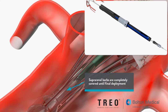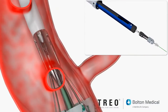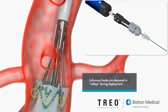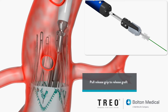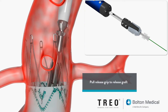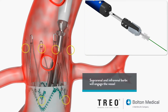The suprarenal barbs are completely covered and the infrarenal barbs are substantially obscured in valleys created by the proximal stent. To release the proximal clasp, first push the gray knob cranially and turn it to release the black release grip. While observing the proximal clasp assembly under fluoroscopy, pull the release grip caudally until it clicks twice to release the bare stent. At this point, the suprarenal and infrarenal barbs will engage the vessel.